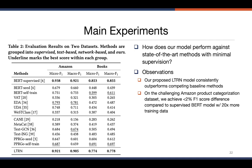Here are the results from our main experiments. We compare our model to various baseline methods, which can largely be grouped into text-based and network-based methods. Our model consistently outperformed all baseline methods on both datasets. On the challenging Amazon product categorization dataset with hundreds of categories, our model achieved less than 2% F1 score difference compared to the supervised BERT model trained with 20 times more training data.